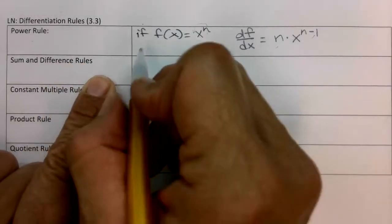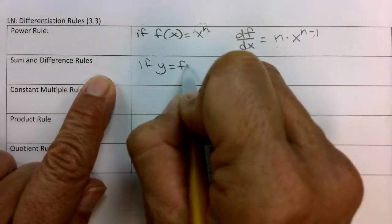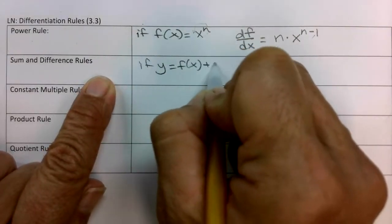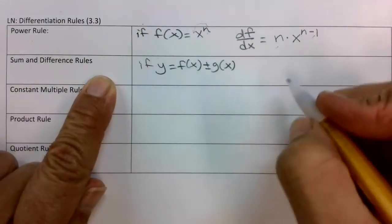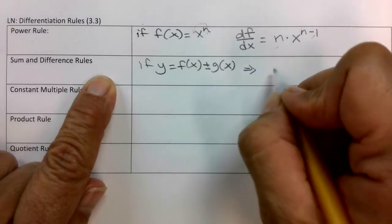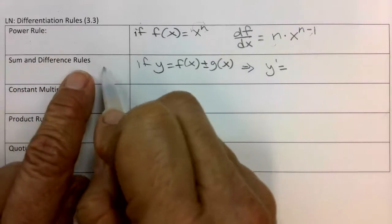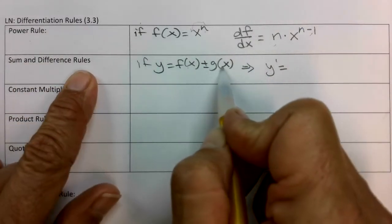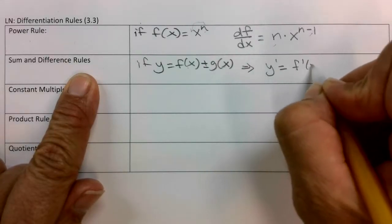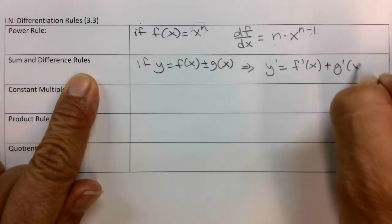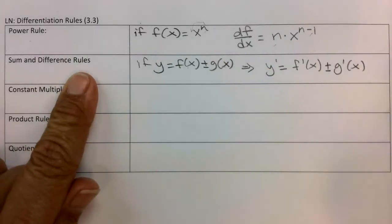Sum and difference rules. If y equals f of x plus g of x — so the sum or difference of two functions — then y prime, dy/dx, whatever notation you're going to use. For adding and subtracting, we can just do term by term. That's going to be f prime of x plus g prime of x. Or if you were subtracting, that would be a minus.